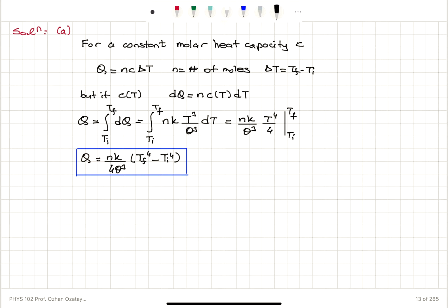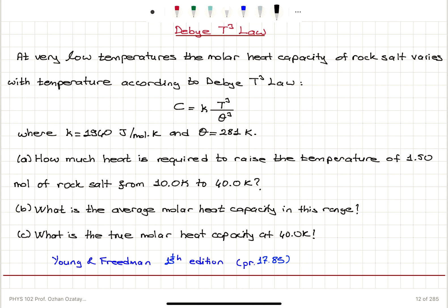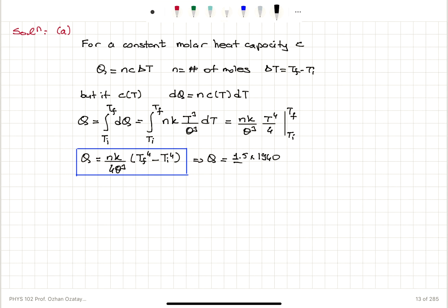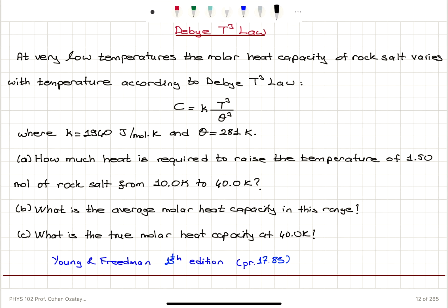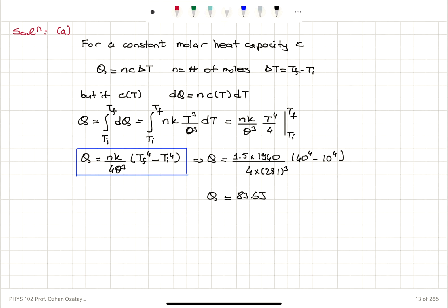Substituting the numbers: Q = 1.5 × 1940 / (4 × 281³) × (40⁴ − 10⁴). The final temperature is 40 Kelvin to the fourth power, and the initial temperature is 10 Kelvin to the fourth power. This gives Q = 83.6 joules, keeping three significant figures.